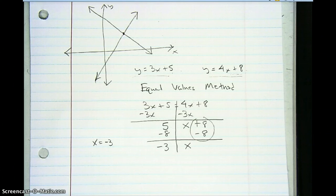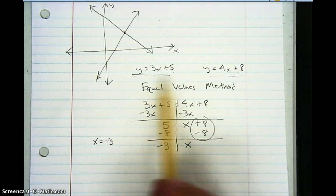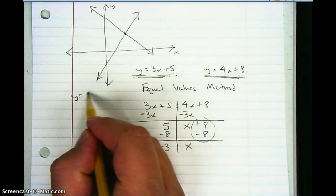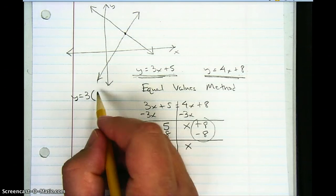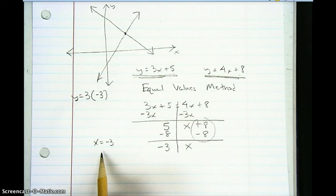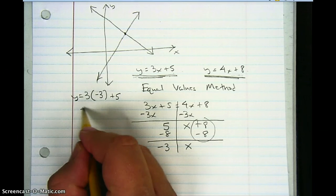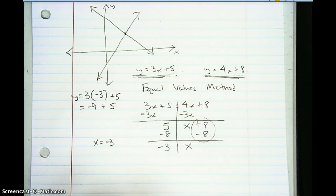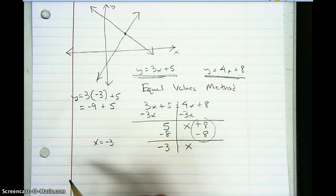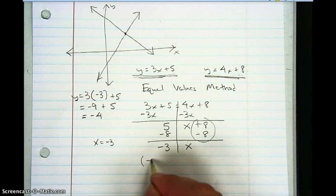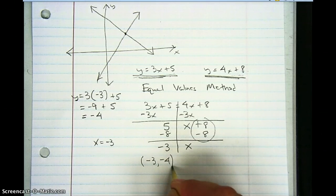To solve for y, I plug negative 3 back into either of my original equations. Using y equals 3x plus 5: y equals 3 times negative 3, which is negative 9, plus 5. Negative 9 plus 5 is negative 4. So my point of intersection is negative 3, negative 4 — those two lines cross at negative 3, negative 4.